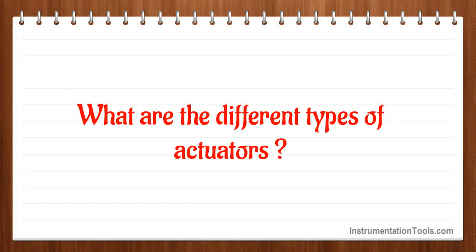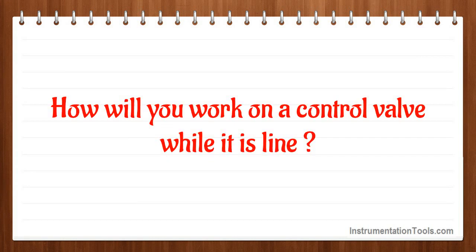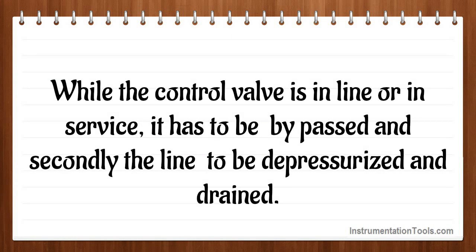What are the different types of actuators? The different types of actuators are diaphragm operated, piston operated, and electrical operated. How will you work on a control valve while it is in line? While the control valve is in line or in service, it has to be bypassed, and secondly the line has to be depressurized and drained.